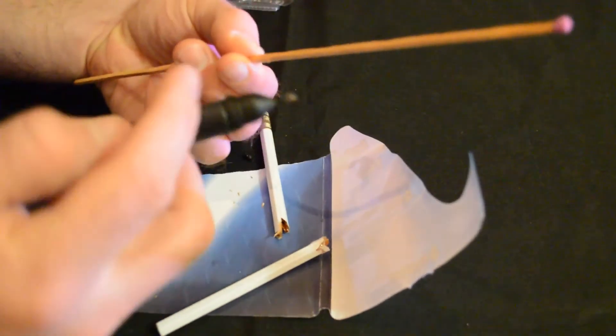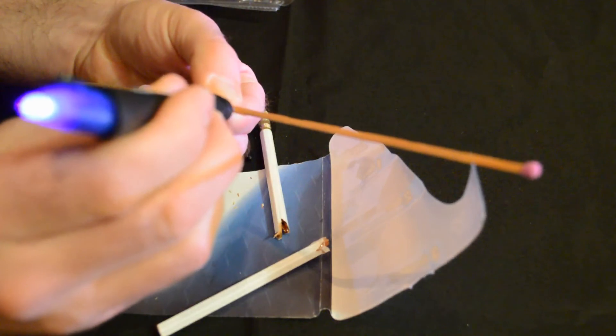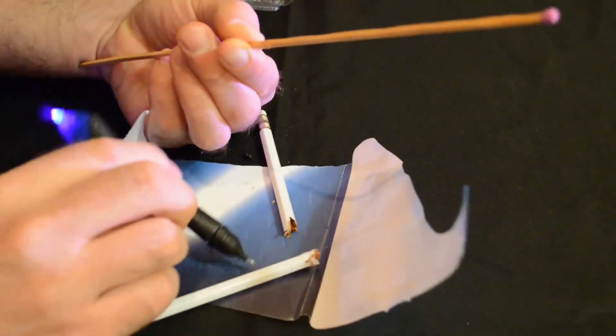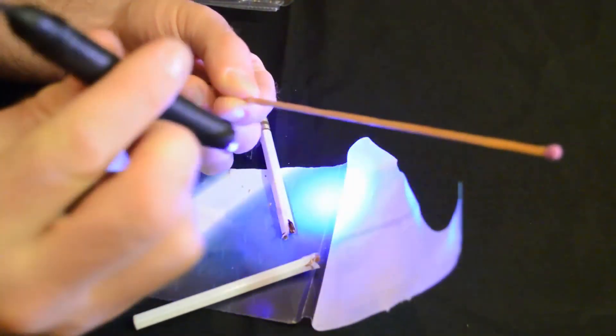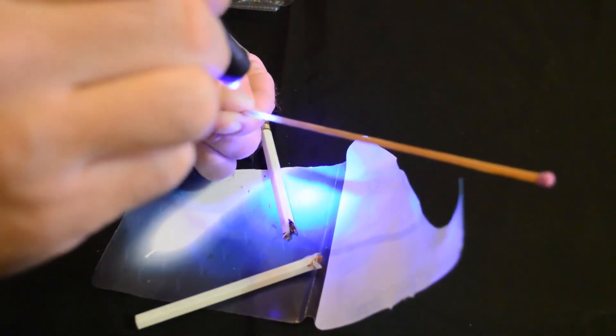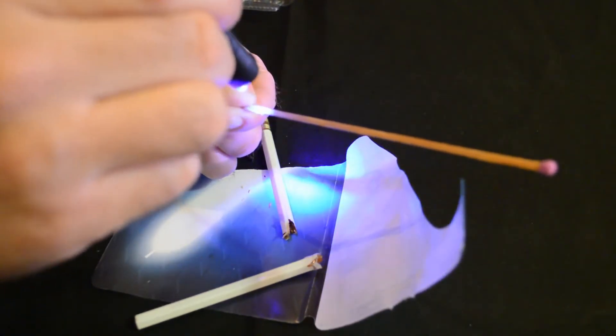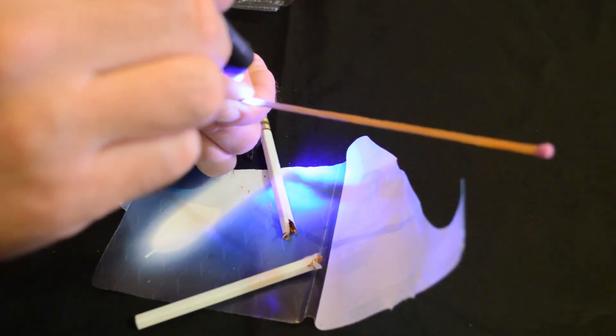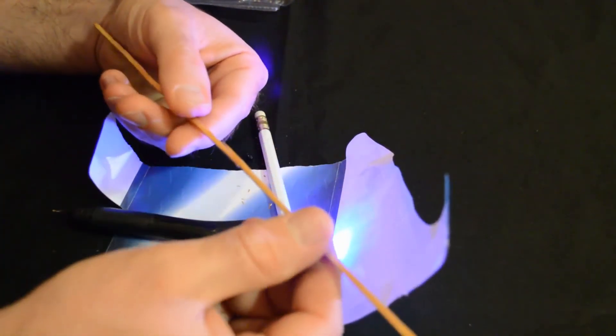All right, let's try the other side here. All right, one thousand, two thousand, three thousand, four thousand, five thousand, six thousand, seven thousand, eight thousand, nine thousand, ten thousand. All right, here we go.